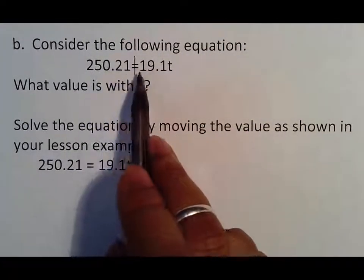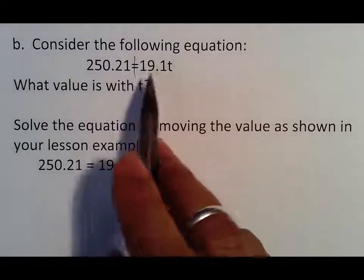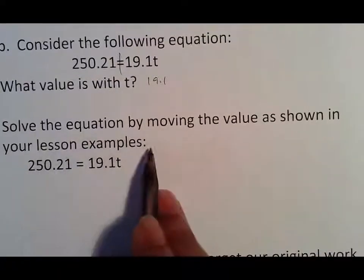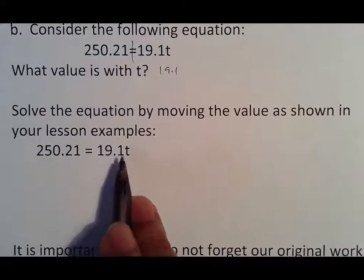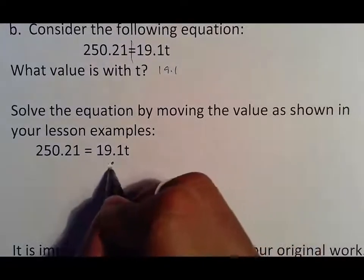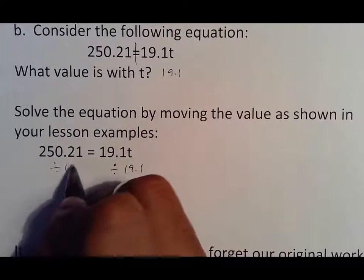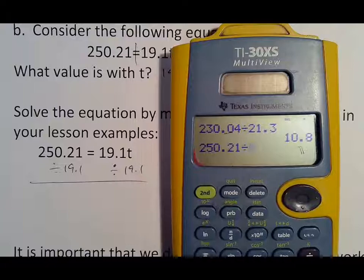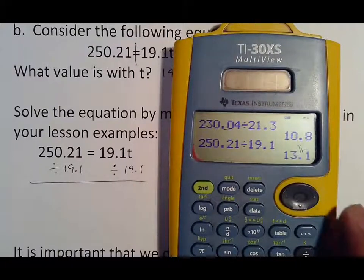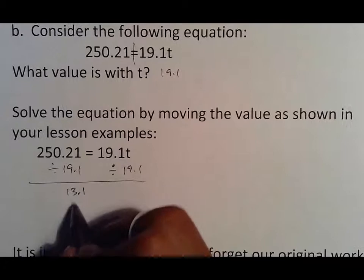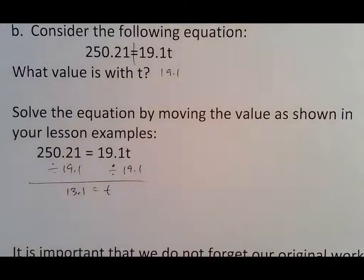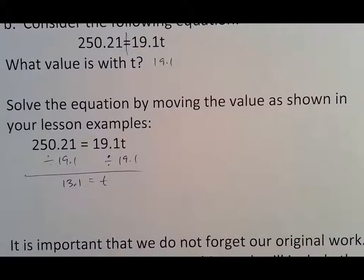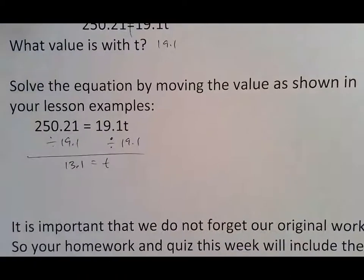With this, 250.21 equals 19.1T. What value is with T? Of course, 19.1 is with T. So solve by moving the value as shown in your lesson example. If I want to get T by itself and I want to get 19.1 out, I'm going to divide by 19.1. So 250.21 divided by 19.1 gives me 13.1 is my answer, which goes over here because that's my number. And T stays over here because it was on the right. So just make sure you're not just assuming that you can just move numbers and variables from one side to the other. You've got to respect whatever side that they are on.